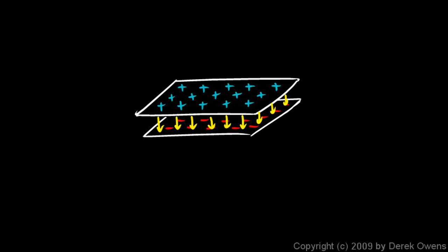This device has a name — it's called a capacitor. You can hook up wires to these plates, put some voltage in, and charge up one plate positive and one negative. This turns out to be a very useful electrical device, and we'll study it later on in the chapter.